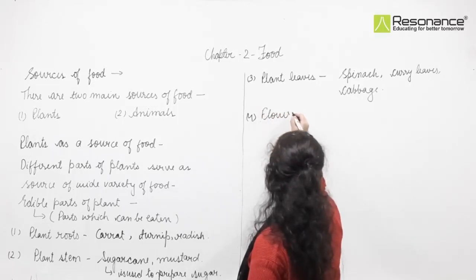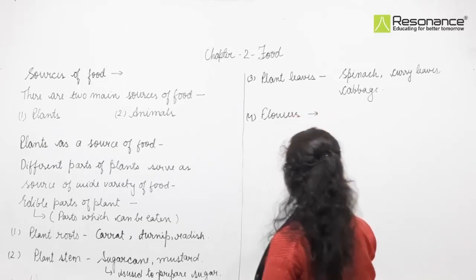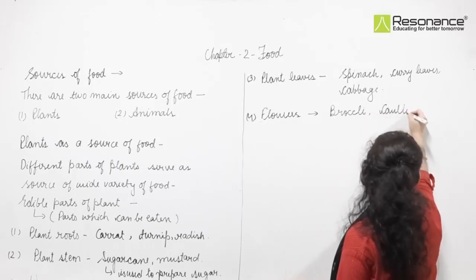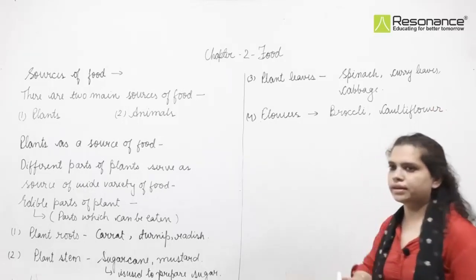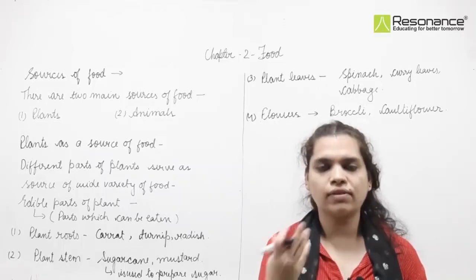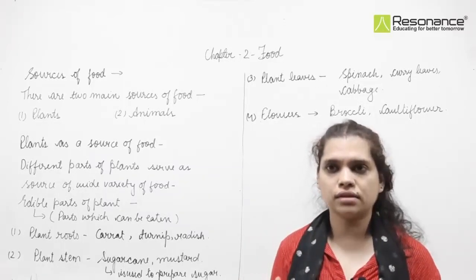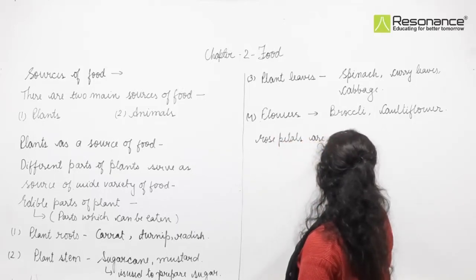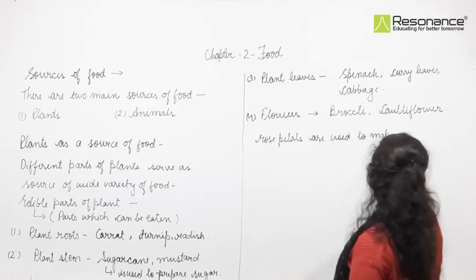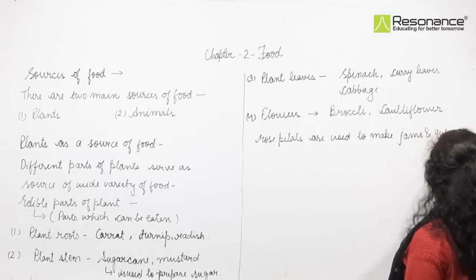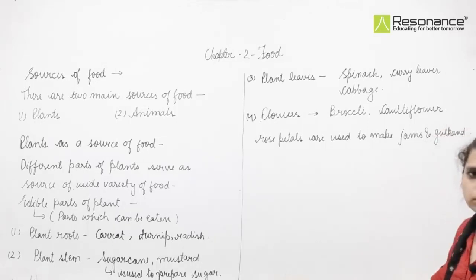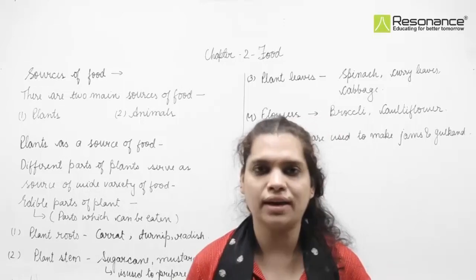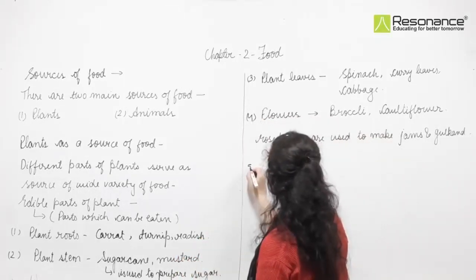Next are plant flowers. Examples include broccoli and cauliflower — these are the flower parts which we consume as food. Rose petals are also used to make jams and gulkand.